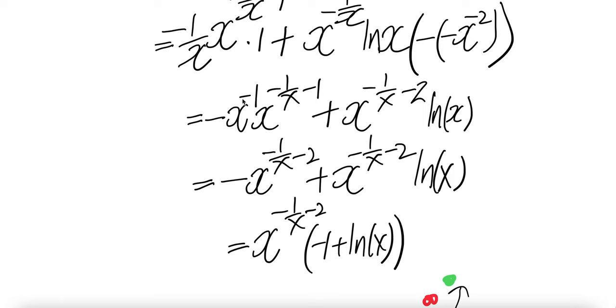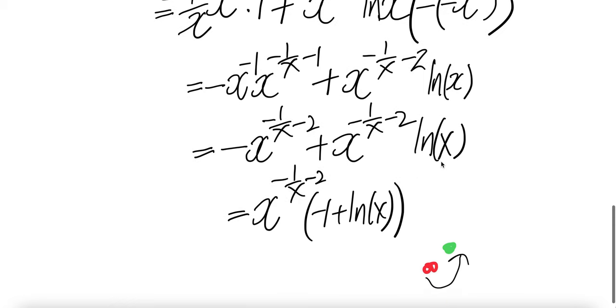And this you can combine. You get x to power negative 1 over x minus 2. Same thing here. And then lnx. Bring out the common x to power negative 1 over x minus 2 for this guy and lnx for this guy.